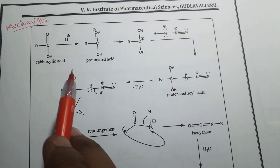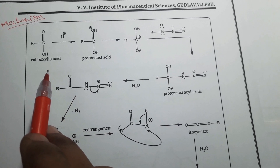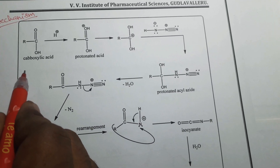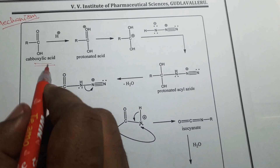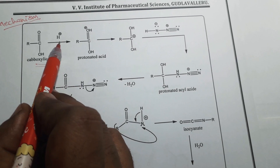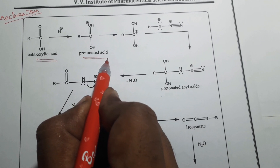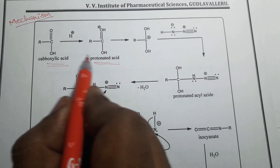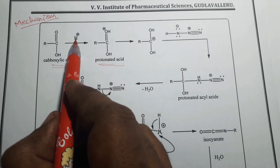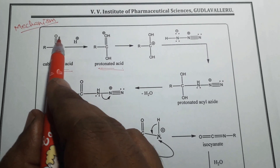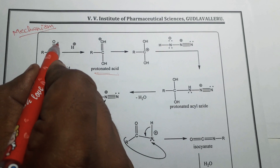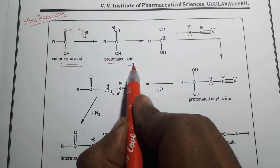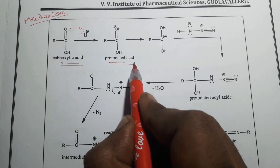Coming to the mechanism of this Schmidt rearrangement: carboxylic acid takes a proton from sulfuric acid and gives the respective protonated acid derivative.